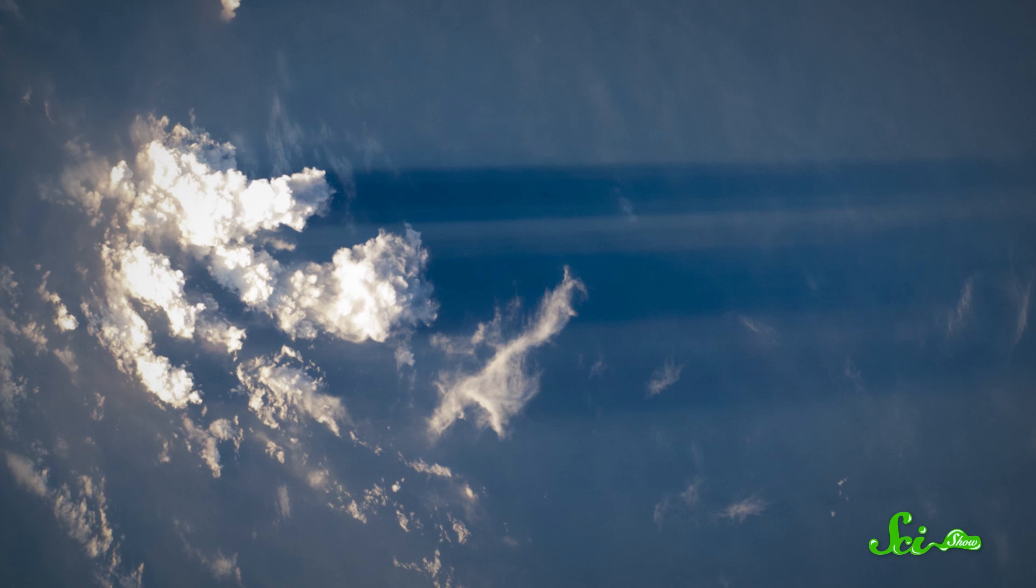If you could see crepuscular rays from space, you would see them for the parallel lines that they really are. And this is a thing that we know, because astronauts have seen crepuscular rays from space, and this is what they see.